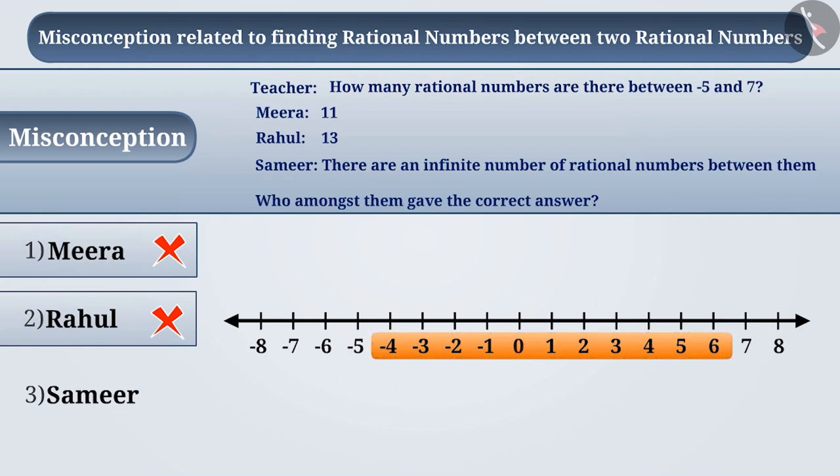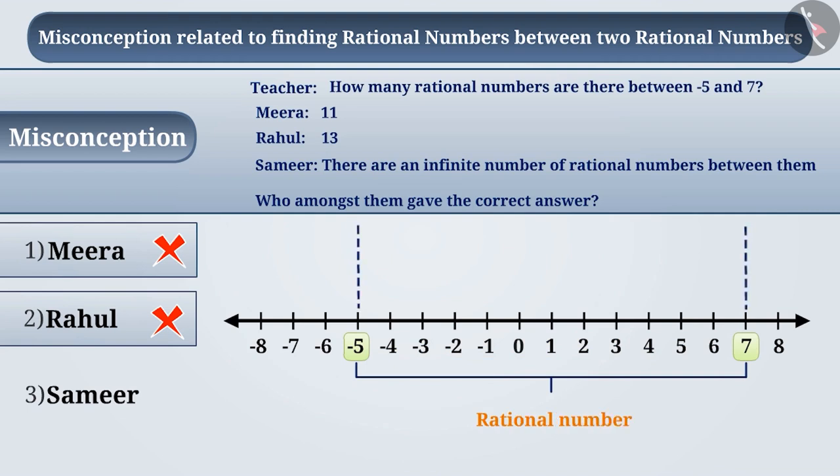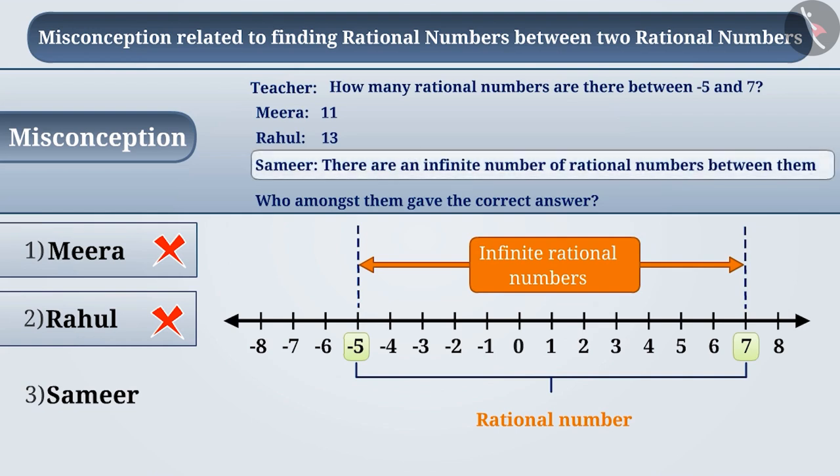The correct understanding is that both minus 5 and 7 are integers as well as rational numbers. Between these two numbers, there are several rational numbers. Hence, between these two numbers, there are infinite rational numbers. That is, Sameer's answer is correct. The correct answer to the question is option 3.